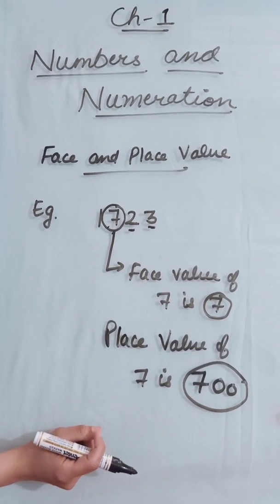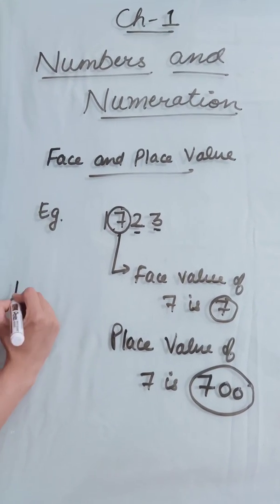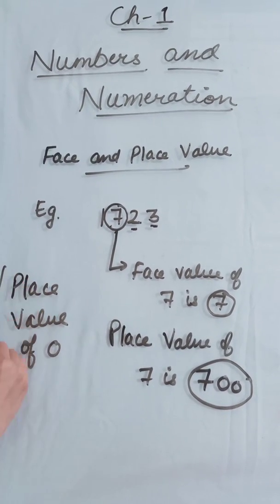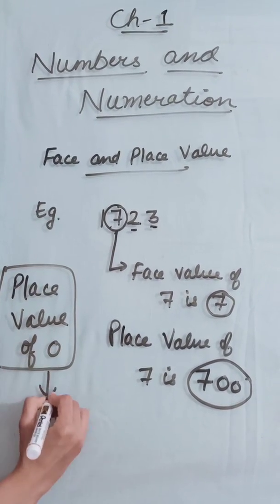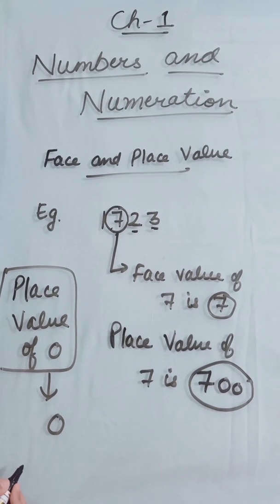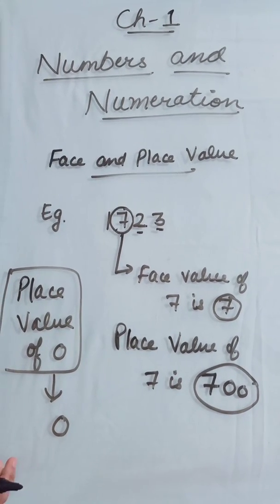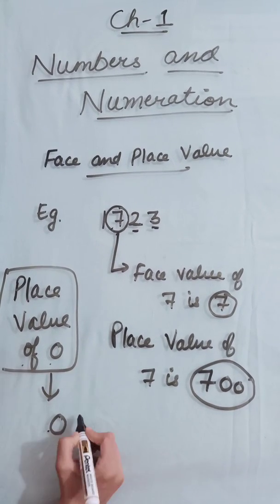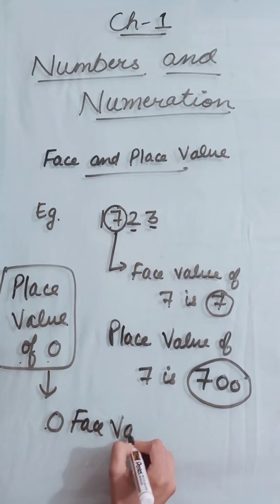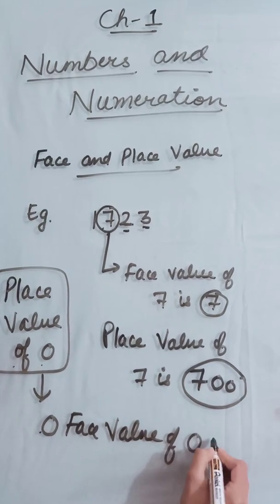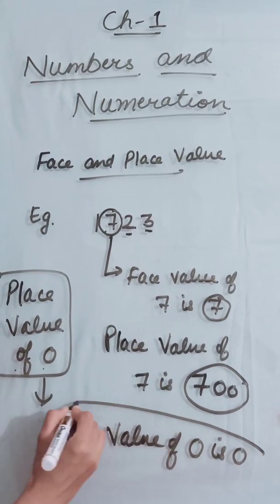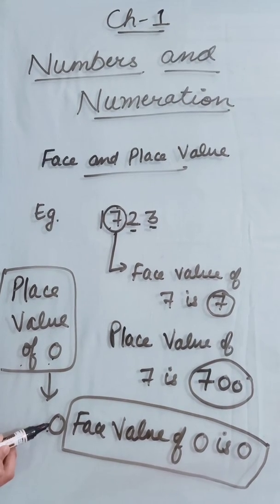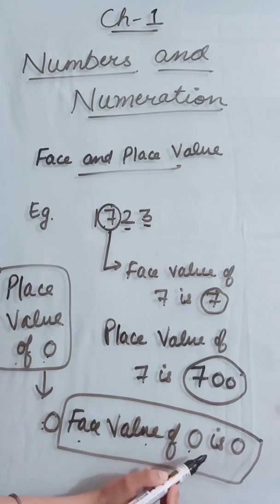One important point: the place value of zero is always zero, because it does not depend upon the place it occupies. Also, the face value of zero is always zero. Remember these two points: the place value of zero is zero and the face value of zero is zero.